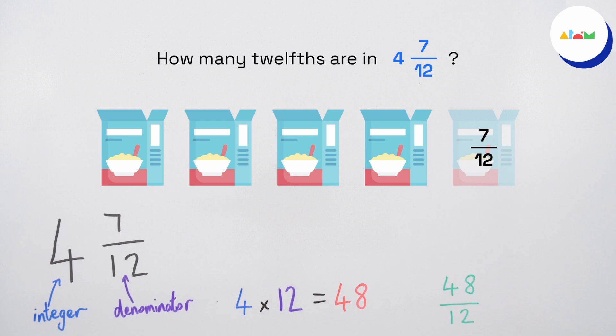We now need to add on the proper fraction, seven twelfths. Forty-eight twelfths plus seven twelfths equals fifty-five twelfths. Dina can have another fifty-five bowls of cereal before she runs out.